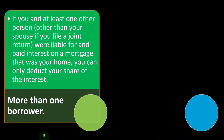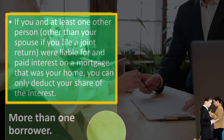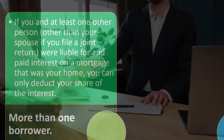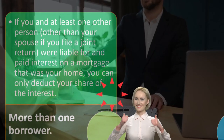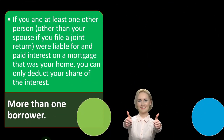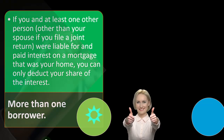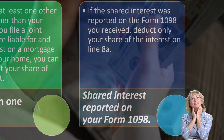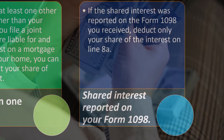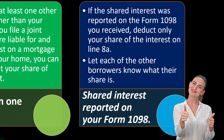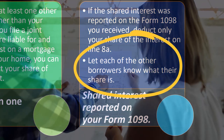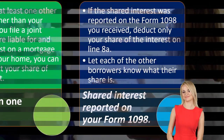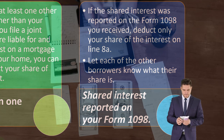More than one borrower: if you and at least one other person — other than your spouse if filing jointly — were liable for and paid interest on a mortgage that was your home, you can only deduct your share of the interest. You might get a Form 1098 for an amount that isn't all applicable to you because multiple people are purchasing the home. If the shared interest was reported on the Form 1098 you received, deduct only your share on line 8A, and let each other borrower know what their share is so they can possibly deduct it as well.